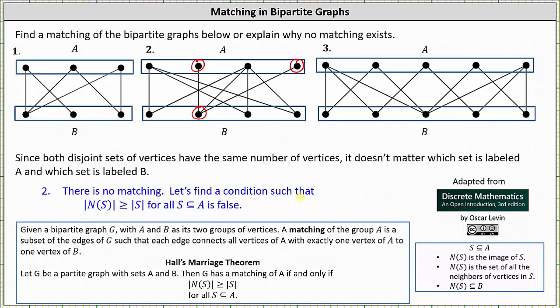But let's find a condition that the cardinality of N of S is greater than or equal to the cardinality of S for all S which are subsets of A is false, which we know must be true in order to have a matching of A stated by Hall's marriage theorem below. And we actually already have the information we need. S is a subset of the set A. If we let S equal the set of vertices circled in set A, the cardinality of S, meaning the number of vertices in the set S, is equal to two.